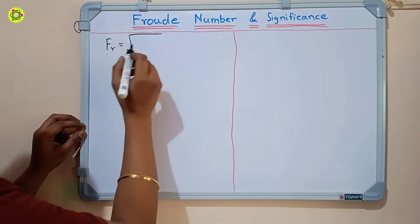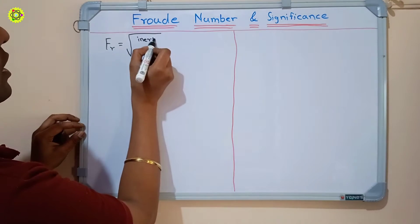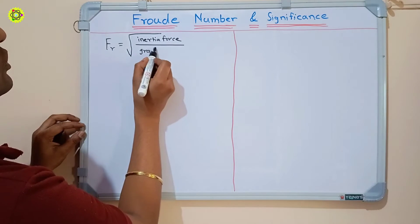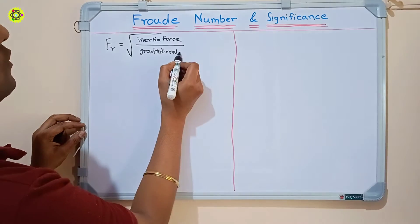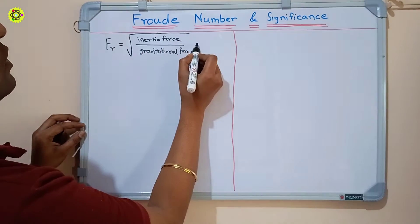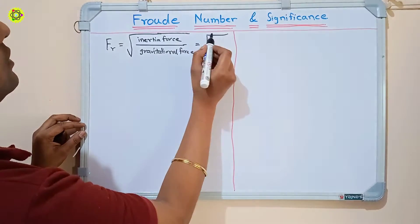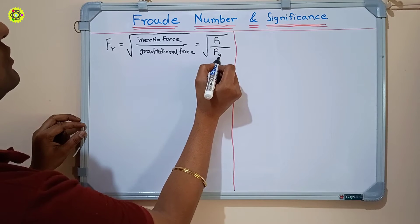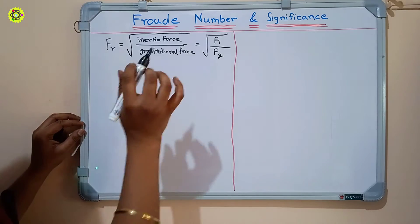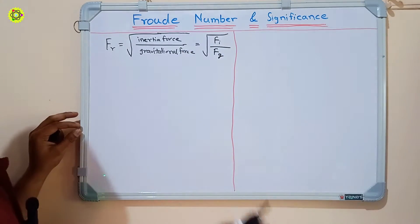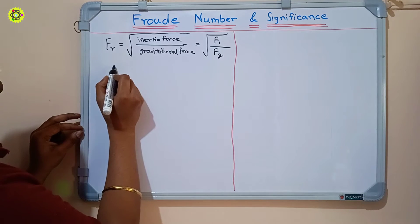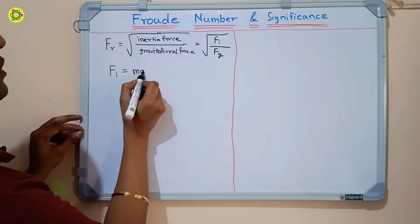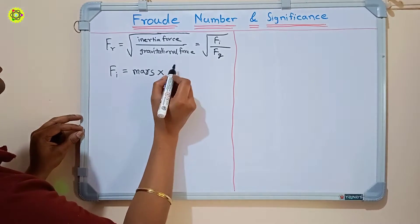Froude number is the ratio of inertia force and gravitational force — it equals the square root of inertia force upon gravitational force. We can rewrite this as the square root of Fi upon Fg, where Fi is inertia force and Fg is gravitational force. Now let's first calculate the inertia force.